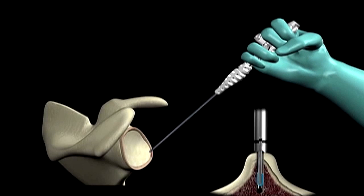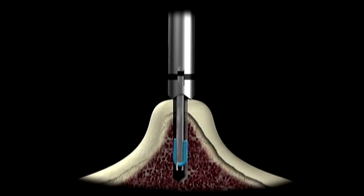Lightly mallet the handle to fully seat the anchor into bone. Align the laser etch marks to ensure the anchor is inserted to the appropriate depth.